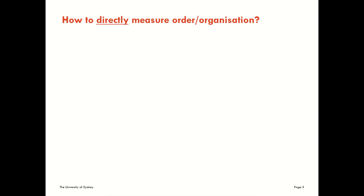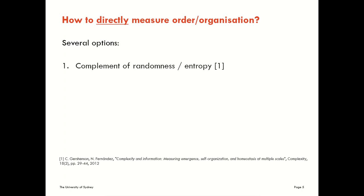First let's think about how to directly measure order or organisation in a system at a system level. There are several options here using information theory. Information theory is really a natural choice, particularly when we think about how we've used it before to think about when a system is ordered or random, looking at the more randomness, the more entropy and so on.